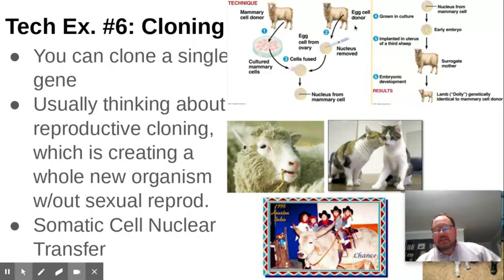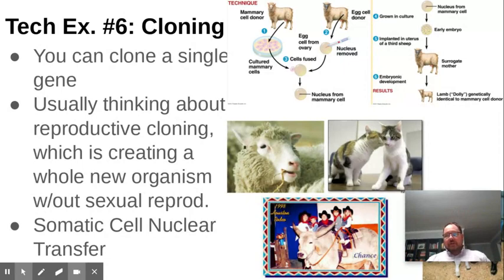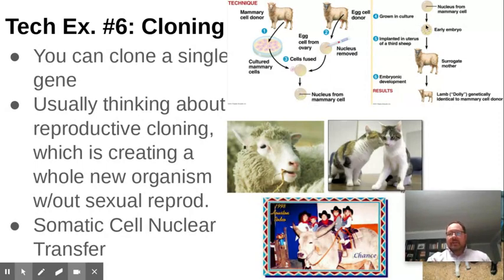They take the diploid nucleus from a donor somatic cell and put it in the egg. Then they stimulate the egg to divide, creating an embryo, and implant the embryo into a third sheep that will carry the offspring - in this case, Dolly. So you have a donor egg, you take the nucleus out, you have a donor somatic cell with a diploid nucleus, you get that nucleus into the once-empty egg, stimulate it to divide, and you get a brand new organism.